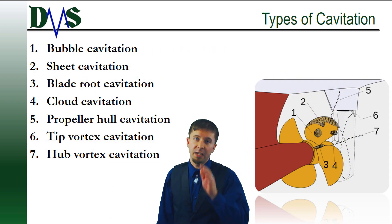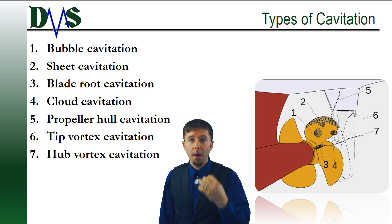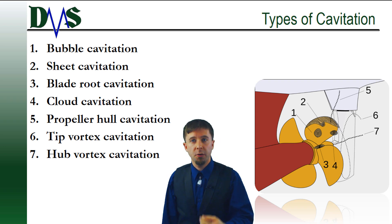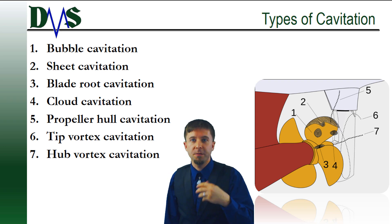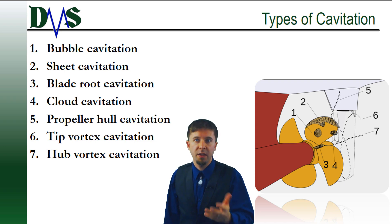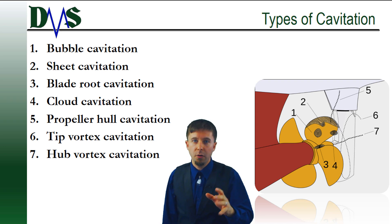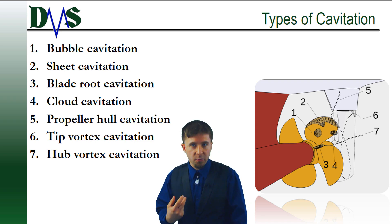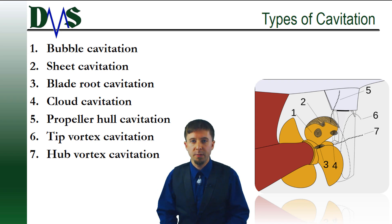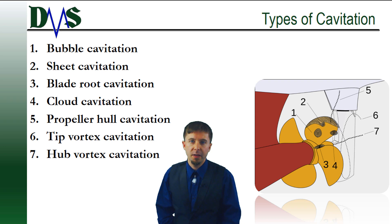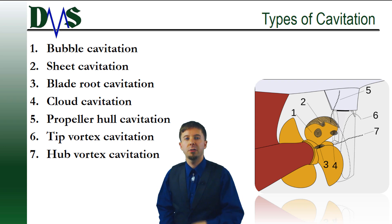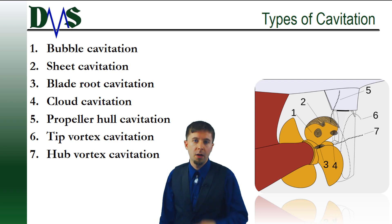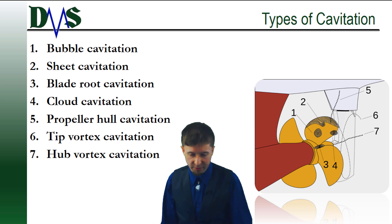So cavitation is bad and it arises from large changes in pressure at the propeller. But a propeller does not create a single uniform pressure field. The pressure varies along the propeller blades and the root due to many interacting parts of the propeller geometry. For this reason, we classify the different types of cavitation based upon the section of the propeller that generates those bubbles. I'm going to focus on two major types: bubble cavitation and sheet cavitation.